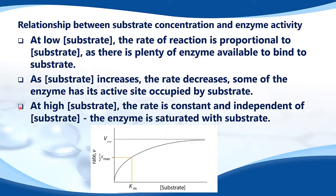At high concentrations of substrate, the rate is constant and independent of the concentration of the substrate — the enzyme is saturated with substrate. So from the graph, you can see the line becomes horizontal. At this point the enzyme is saturated.